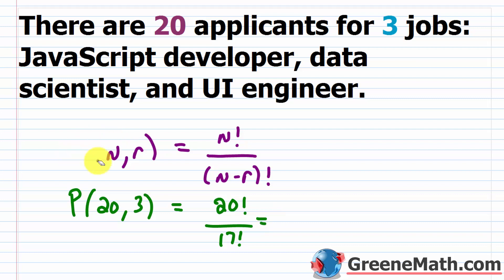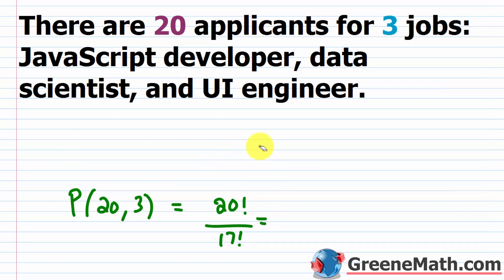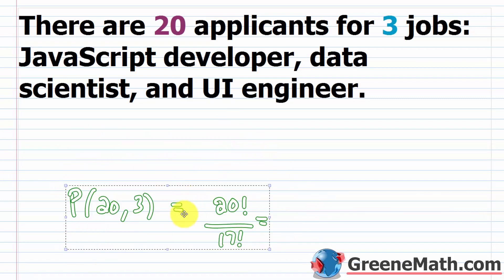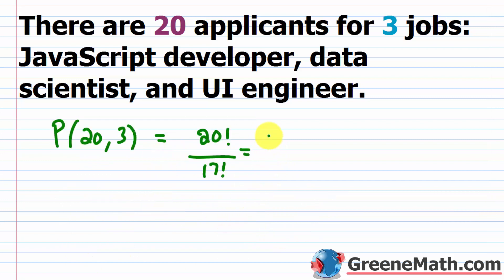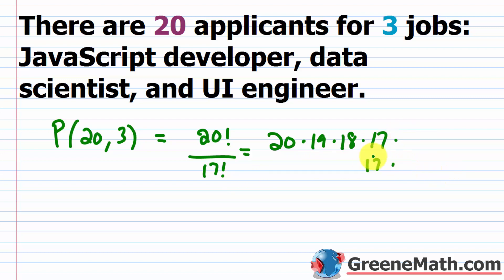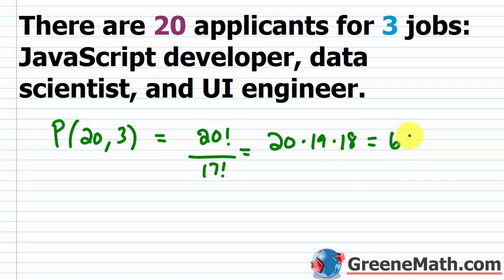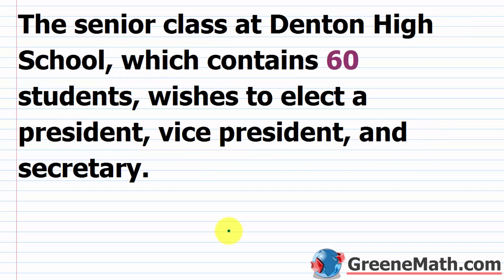For future ones I'll just punch it into the calculator to make it quicker. But working through this one: it's 20 times 19 times 18 times 17 and so on, but the 17 factorial cancels, leaving 20 times 19 times 18. That gives us 380 times 18, which equals 6,840.